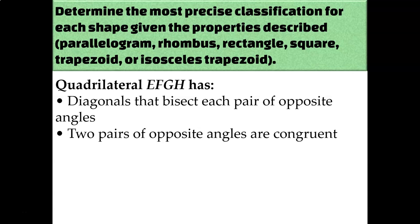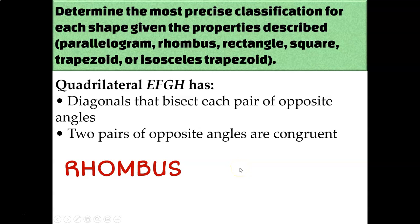Quadrilateral EFGH has diagonals that bisect each pair of opposite angles, and two pairs of opposite angles that are congruent to each other. Diagonals that bisect each pair of opposite angles is unique to rhombuses, so that has to be a rhombus. Could it be more specific — could it be a square? The next clue is two pairs of opposite angles that are congruent, but that's actually only true for parallelograms, so it doesn't refine our classification. Rhombus is the most precise classification we can apply to this quadrilateral.